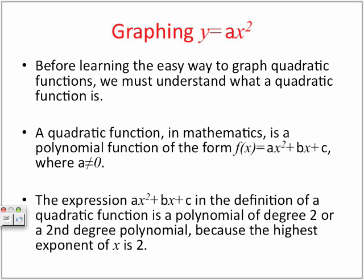Before learning the easy way to graph quadratic functions, we must understand what a quadratic function is. A quadratic function in mathematics is a polynomial function of the form f(x) = AX squared plus BX plus C, where A cannot equal zero. If A was equal to zero, what's left in this function? We'd only be left with BX plus C, which is what we call a linear expression.